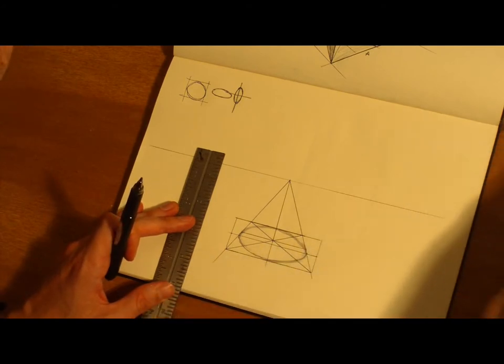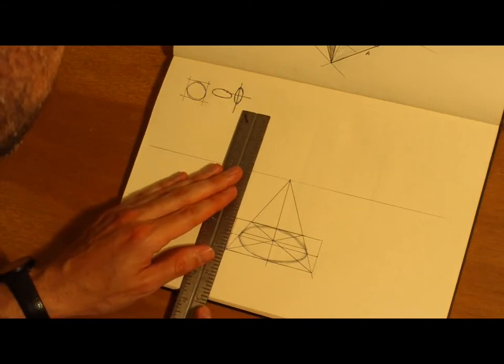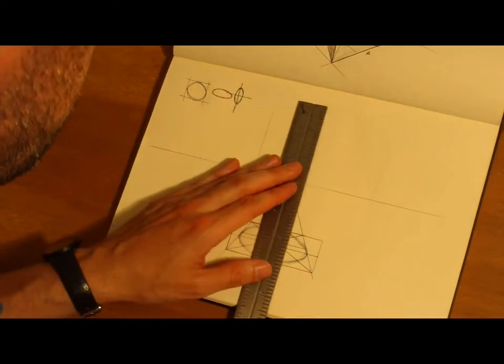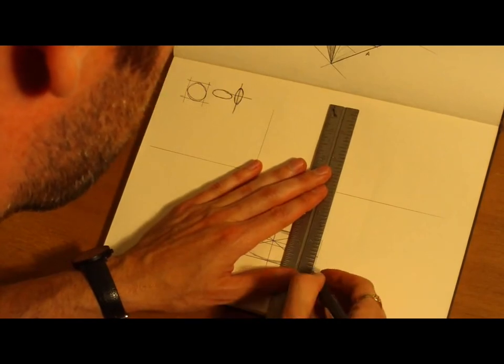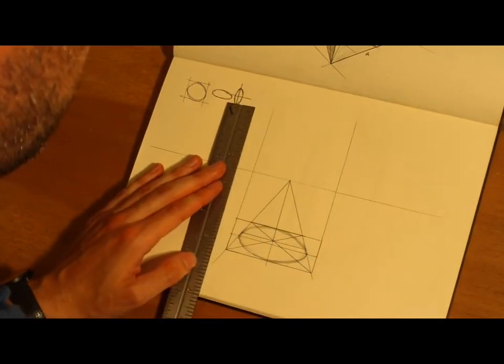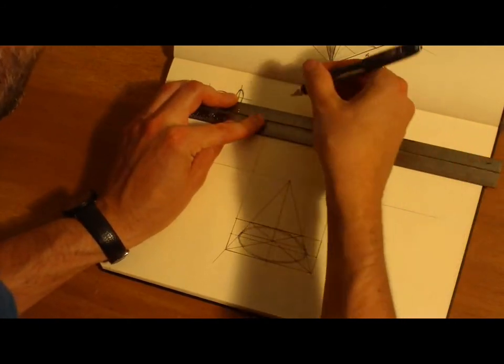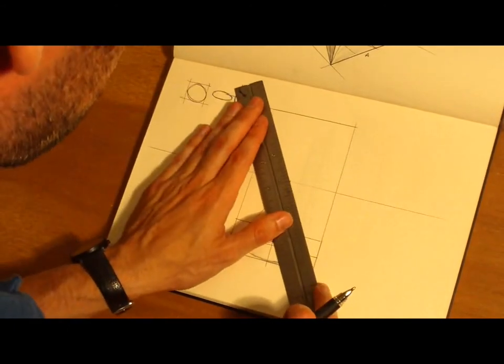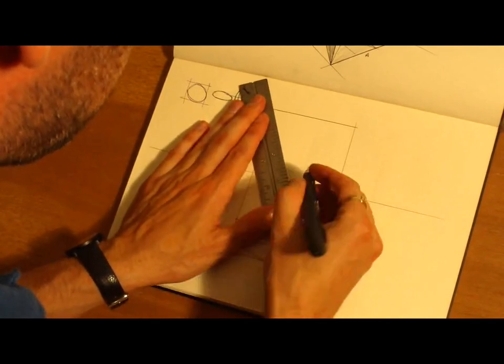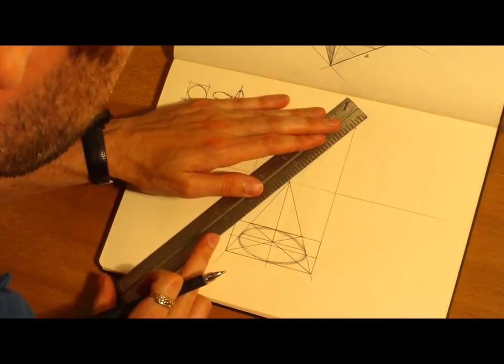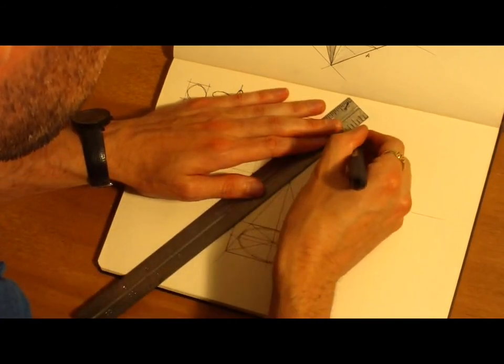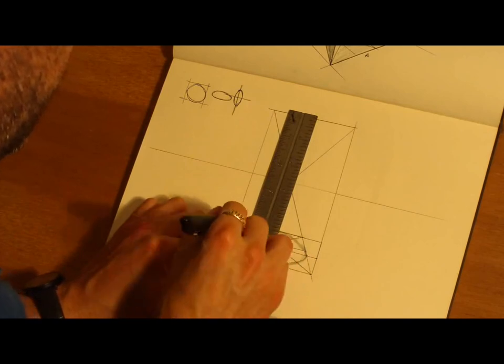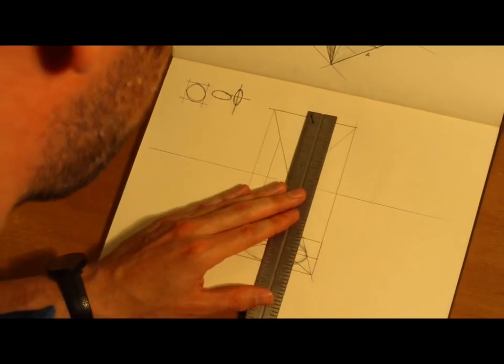We're going to actually follow this same method and just project upwards. We're going to pick the top of our plane up here. We're going to pull our vanishing point to it. And then we're going to project upwards and find our edges of the back plane.